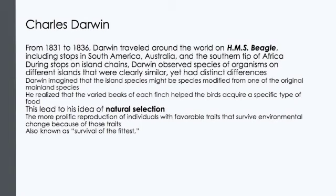By the time Darwin returned to Great Britain five years later after the Beagle set sail, a full three years longer than was originally planned, his experiences and reading had led him to seriously doubt that the earth and all its living organisms had been specially created only a few thousand years earlier. Darwin had come to realize that the earth was very old and constantly changing. He began to analyze his collections and discuss them with colleagues. He continued to read, correspond with other scientists, and maintain extensive journals on his observations, studies, and thoughts. On November 24, 1859, Charles Darwin published On the Origin of Species by Means of Natural Selection.